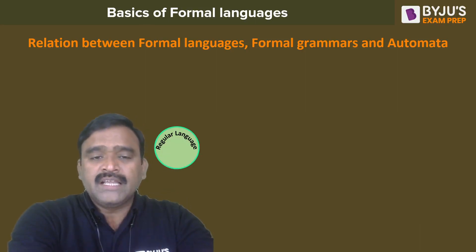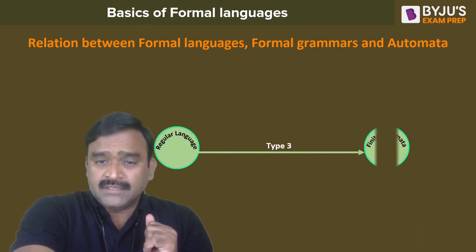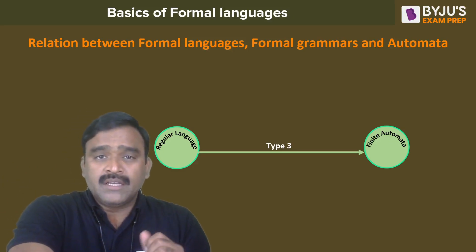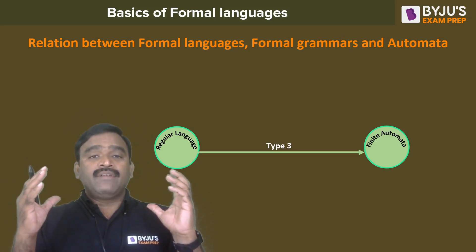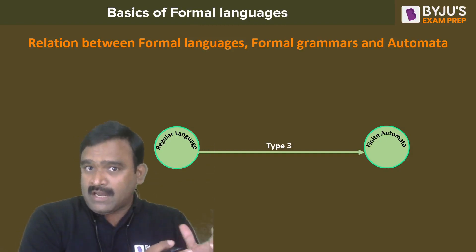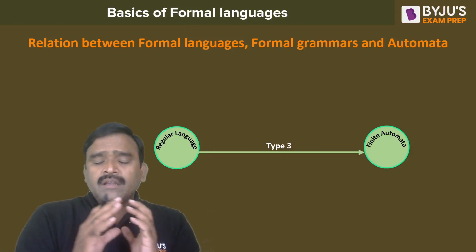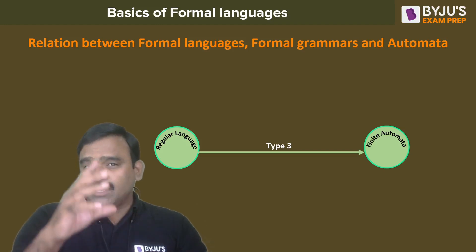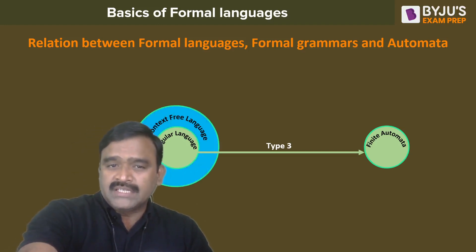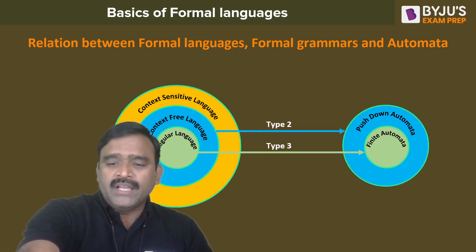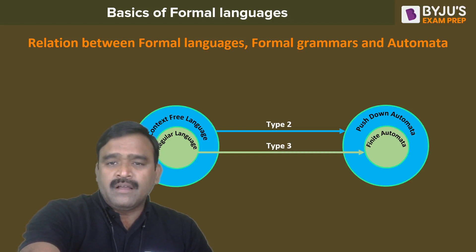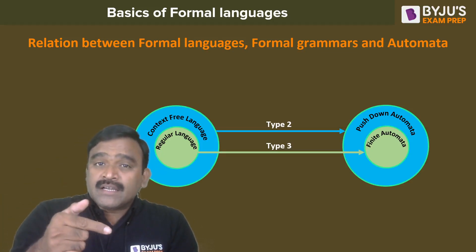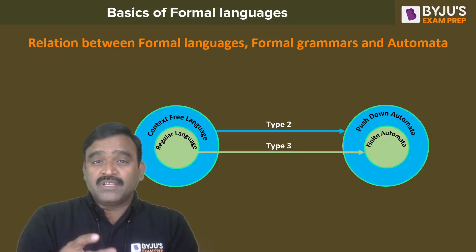Regular languages are recognized by finite automata as their machine counterpart — finite automata can only recognize regular languages; it cannot recognize a language which is not regular. Pushdown automata can recognize both context-free languages and also regular languages, making it more powerful than finite automata.